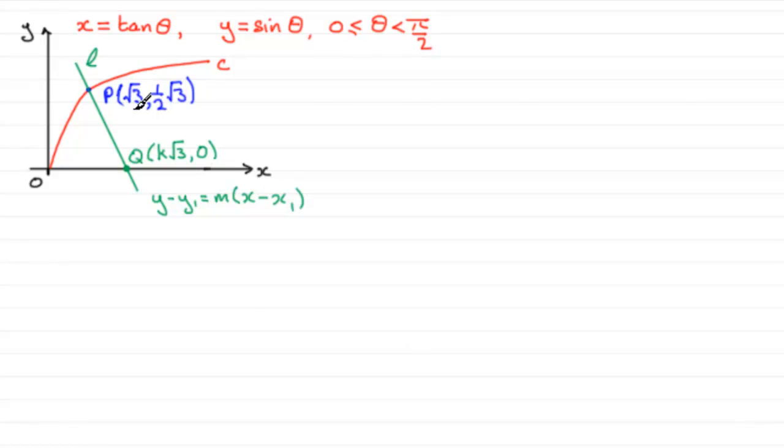And first of all, I find the gradient of the tangent, which is given by dy by dx. So dy by dx I can easily find once I know the differentials of these two functions here. Because by the chain rule, dy by dx is equal to dy by d theta multiplied by d theta by dx. This is as if they cancel out.